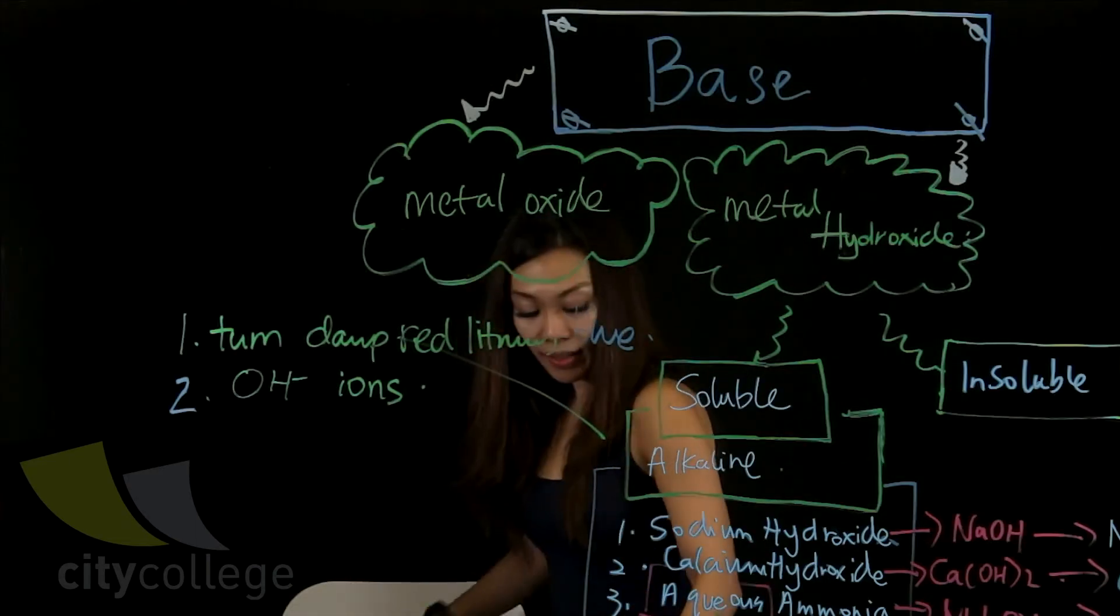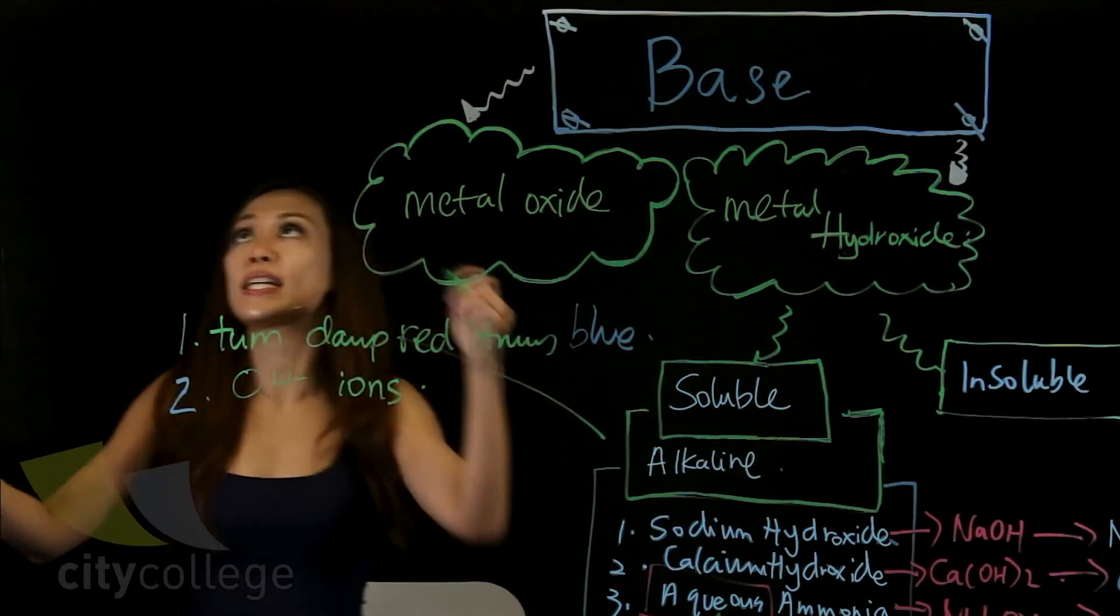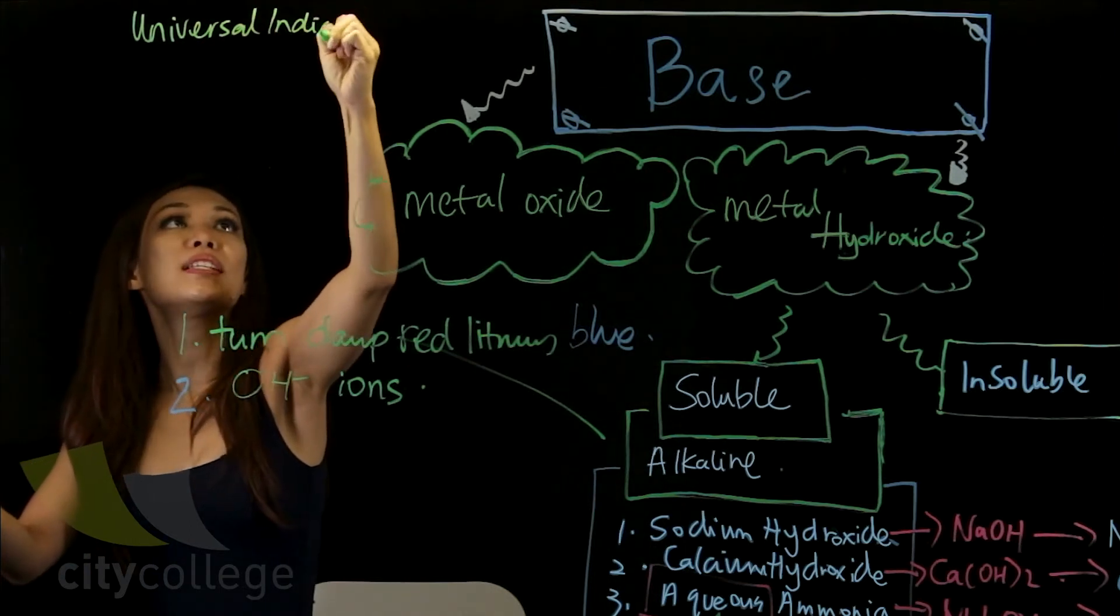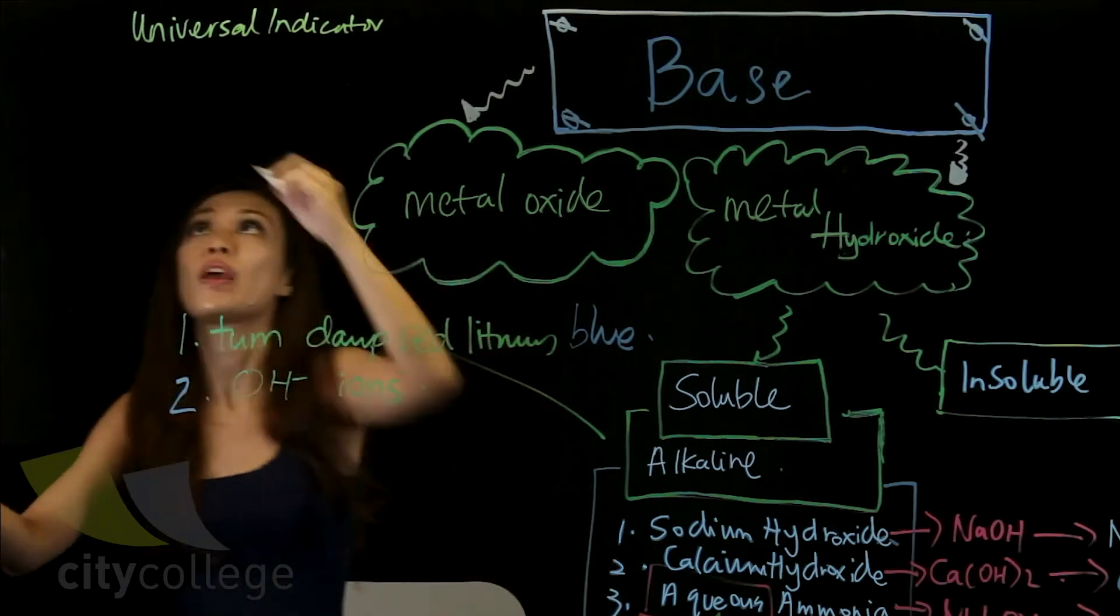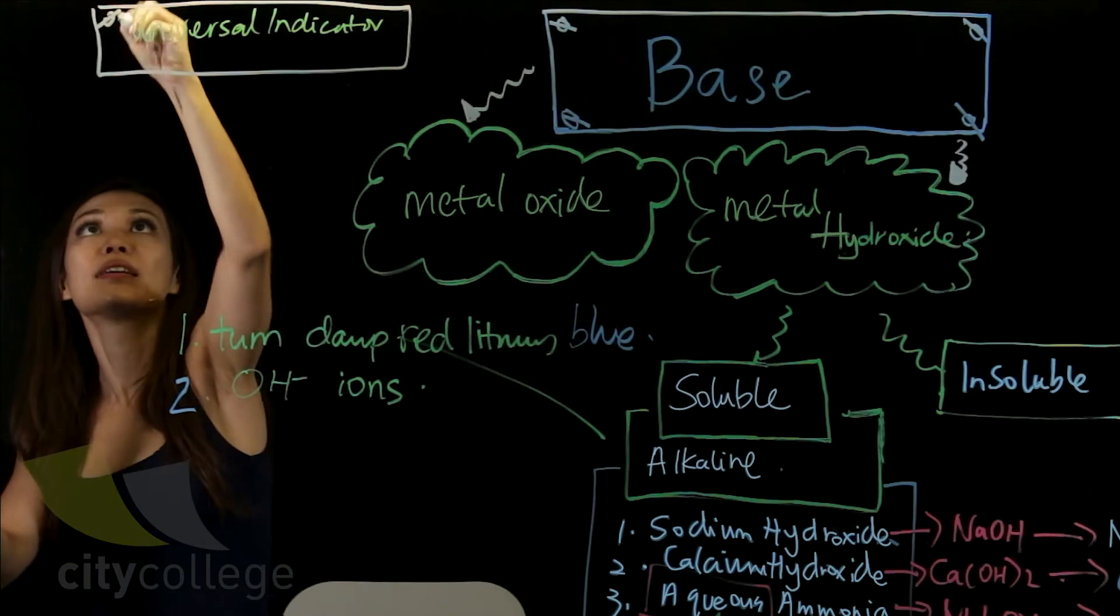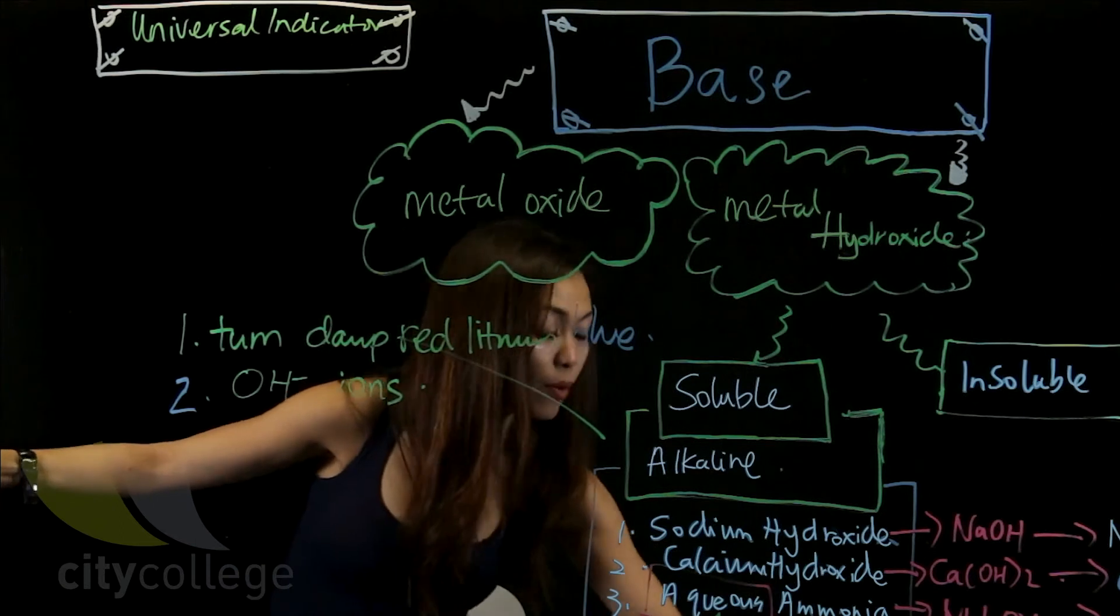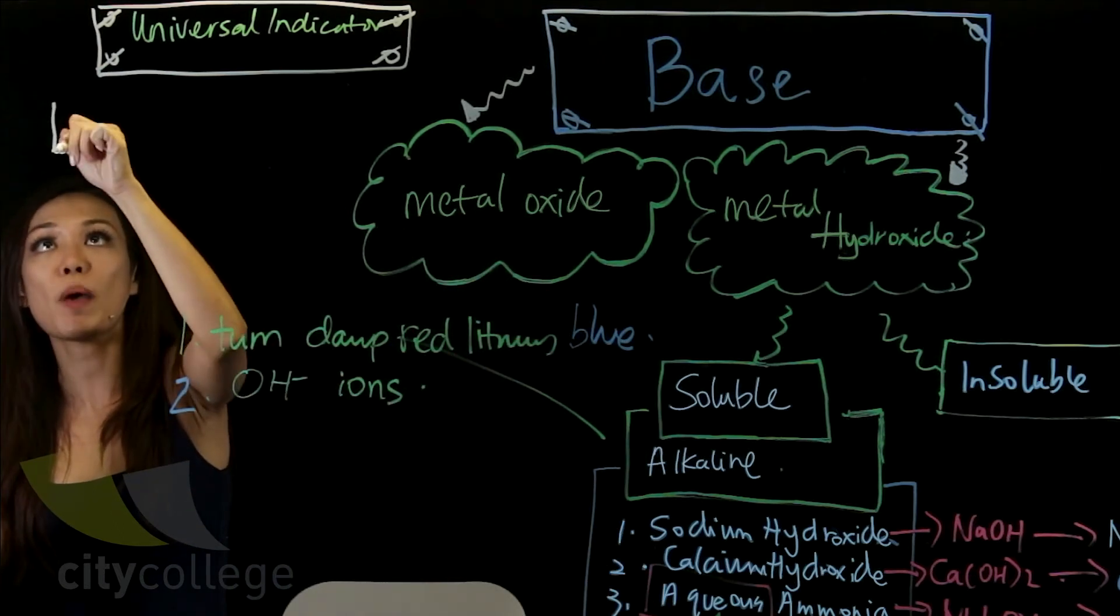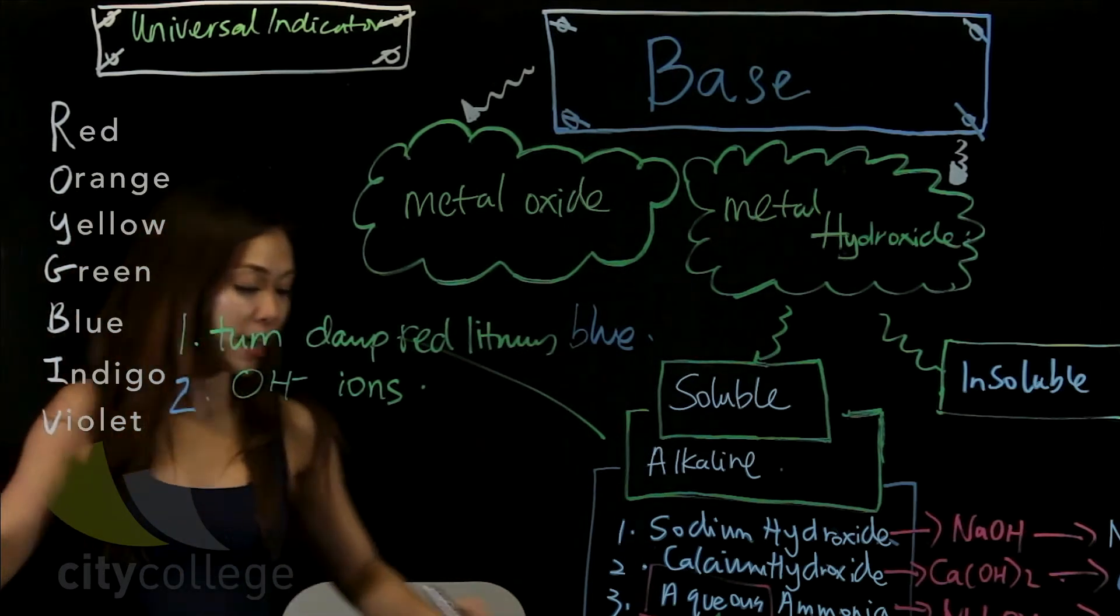Now, so when in actual fact they touch this universal indicator, universal indicator is a very common indicator used to test whether something is acidic or alkaline. And in this case, because it's alkaline, it turns purple. Now I'm going to write down the list of the entire colour. It goes by this acronym: ROY GO BUSINESS in Vietnam.